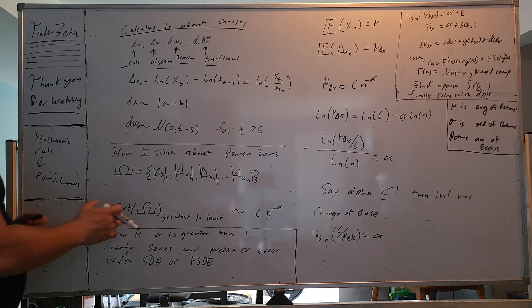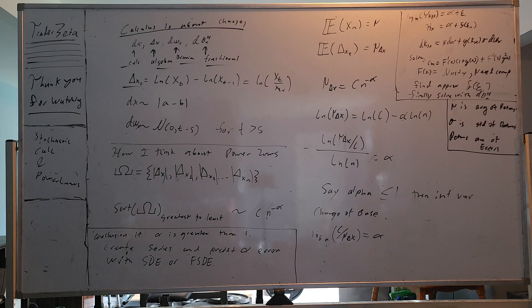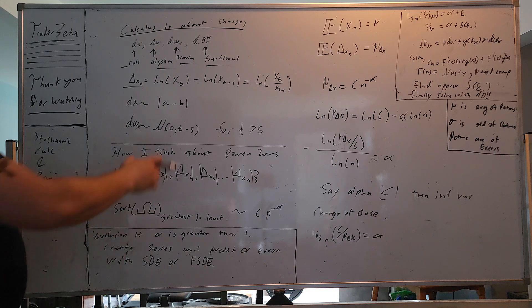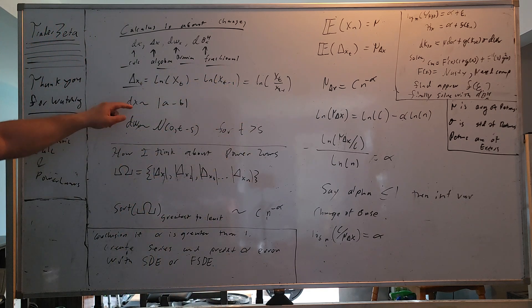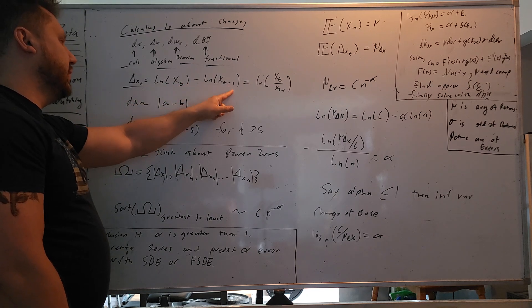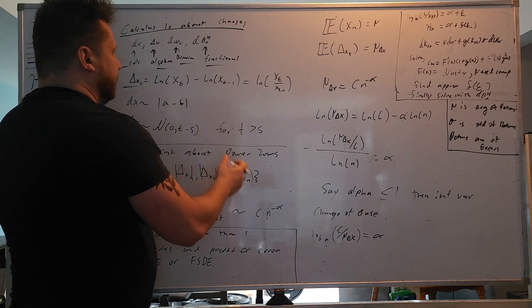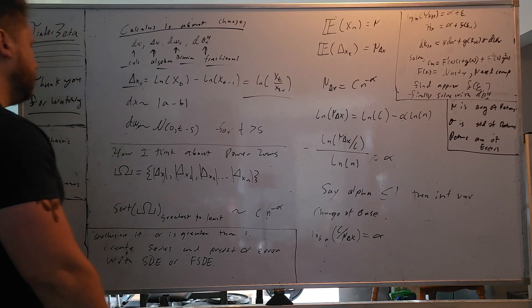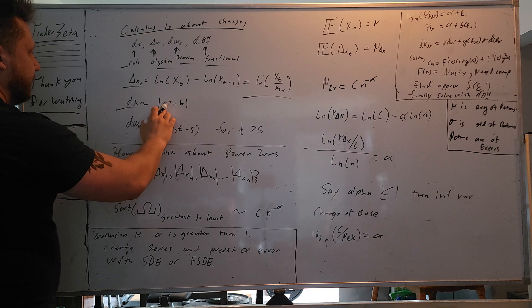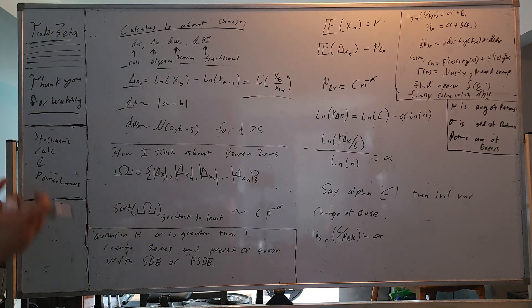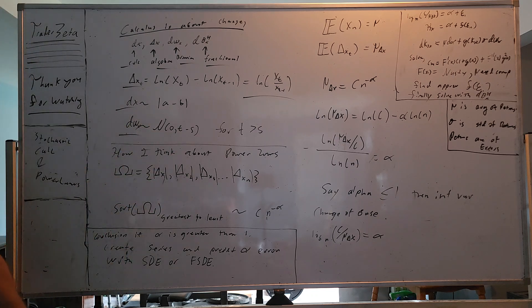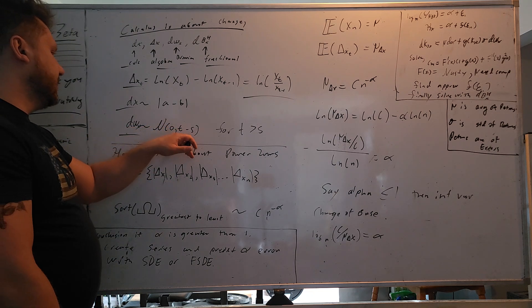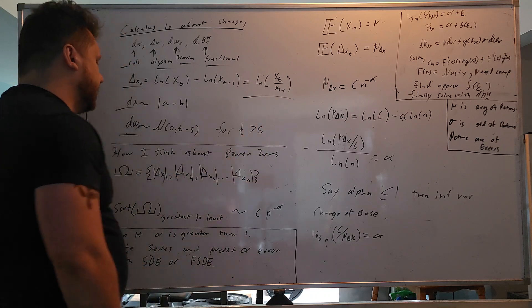Say for example you have some delta x sub t. This is just normal log returns, some type of stochastic process. You have natural logarithm of x_t minus natural logarithm of x_{t-1}. We can put this together using natural logarithm identities. The dx is the absolute value between a minus b, Euclidean metric. D with respect to the Wiener process is normally distributed, mean zero, with standard deviation t minus s for some t greater than s.